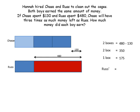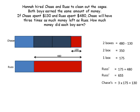So Russ's money is $175 for one box, plus the money that he spent, which was $480. So Russ's original money is $650. For Chase, he had three boxes after spending his $130, so that's three times $175, plus $130 that he spent, which is also $655. Going back to the problem, it mentioned that originally they earned the same amount, and $655 equals $655.